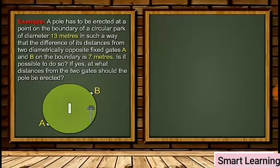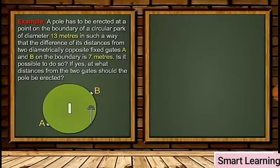A pole has to be erected at a point on the boundary of a circular park of diameter 13 meters, in such a way that the difference of its distances from two diametrically opposite fixed gates A and B on the boundary is 7 meters. Is it possible to do so? If yes, at what distances from the two gates should the pole be erected?